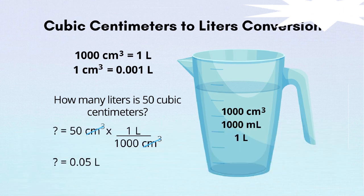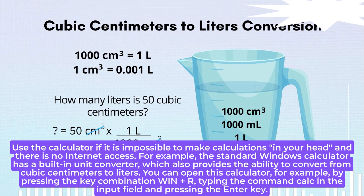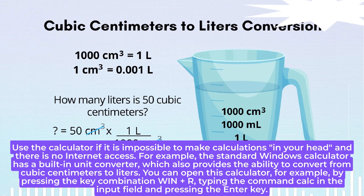Step 3. Use the calculator if it is impossible to make calculations in your head and there is no internet access. The standard Windows calculator has a built-in unit converter, which also provides the ability to convert from cubic centimeters to liters. You can open this calculator by pressing the key combination Win + R, typing the command calc in the input field and pressing the Enter key.